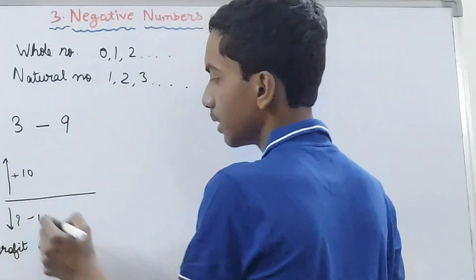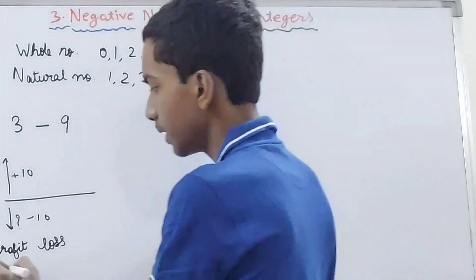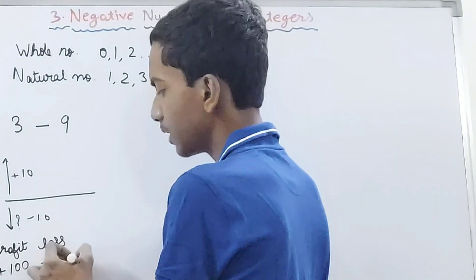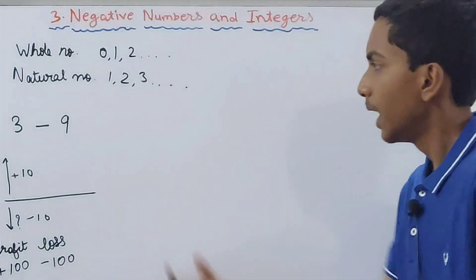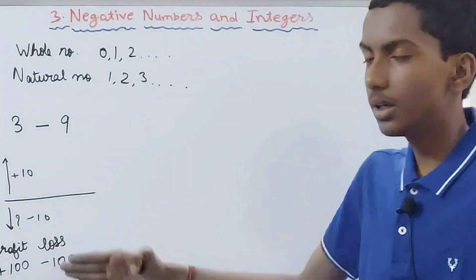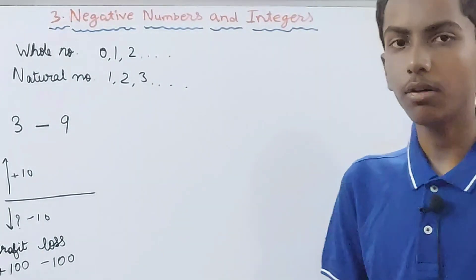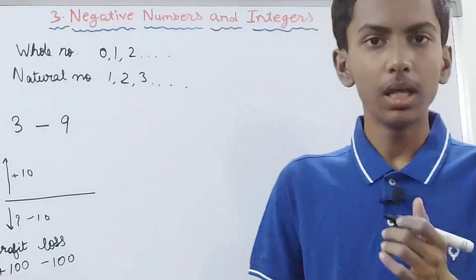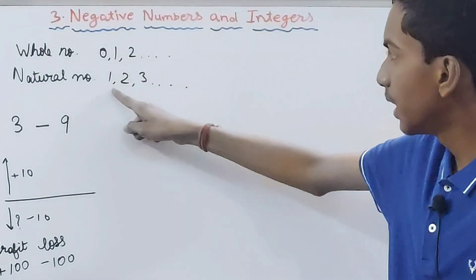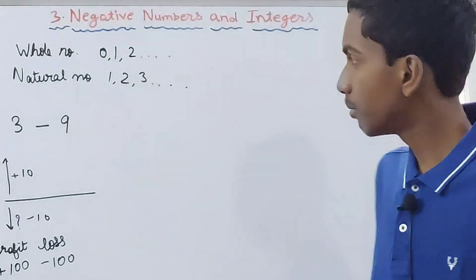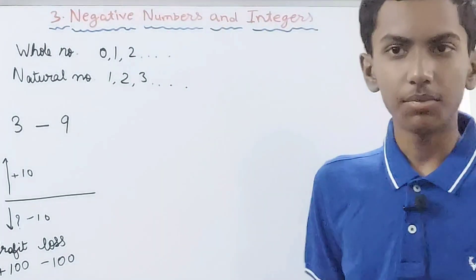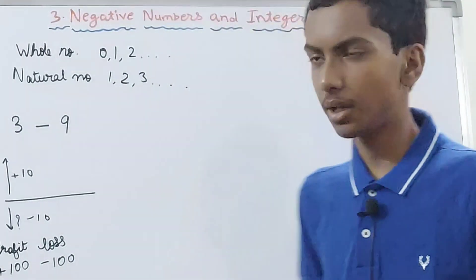Negative numbers are basically numbers represented with a minus sign. If profit is plus 100 rupees, then loss will be minus 100. The integer system includes positive numbers — natural numbers 1, 2, 3 — then 0, which is in whole numbers, and then the negative numbers, which are specially added in the integer system.